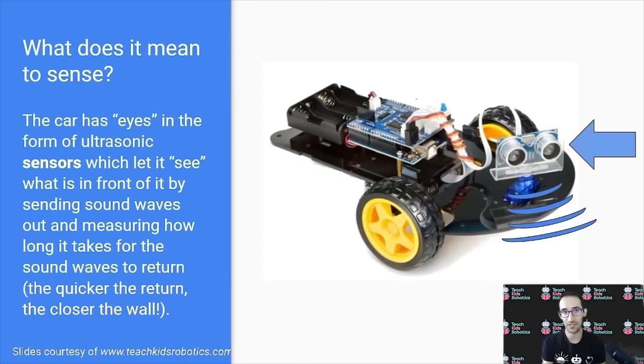So, the car has eyes in the form of ultrasonic sensors, which let it see what is in front of it by sending sound waves and measuring how long it takes for the sound waves to return. The quicker the return, the closer it is to the wall.